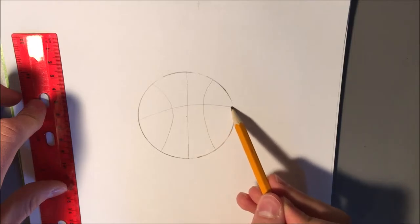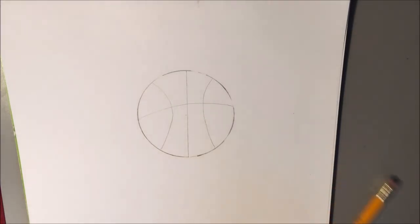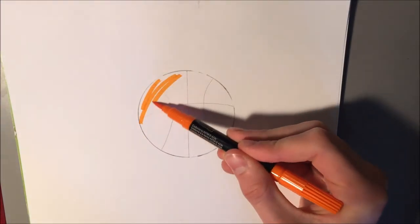Finally, to finish the outline of the ball, draw a horizontal line going through your three other lines. Now that you're done with the outline, you can color it in.